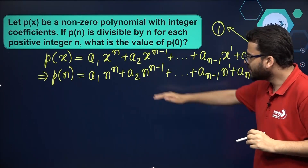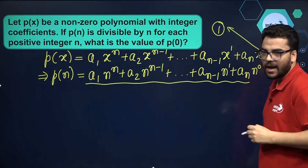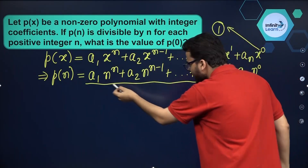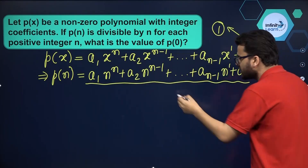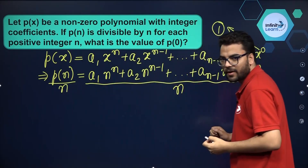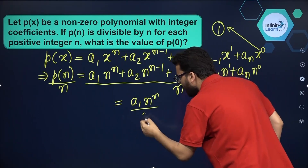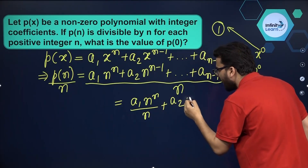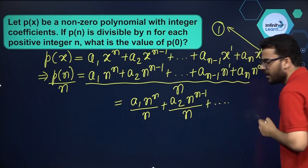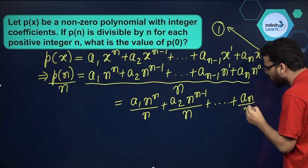It is given that this P of n is divisible by n for every positive integer n. So if you divide this polynomial by n and distribute it, you see n will be cancelled out: a1 n raised to the power n upon n, plus a2 n raised to the power n minus 1 by n, and so on. It will keep going, and you will see that only aₙ will be left.